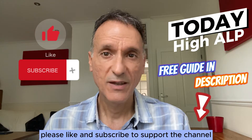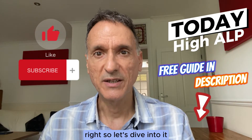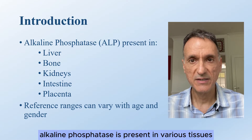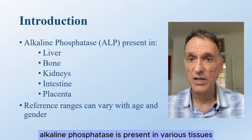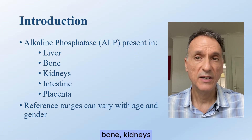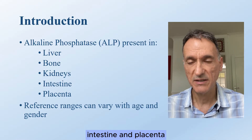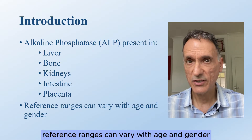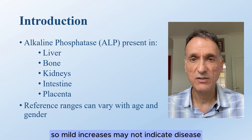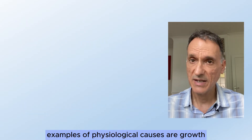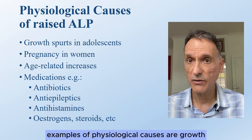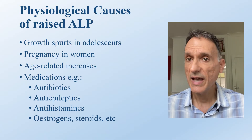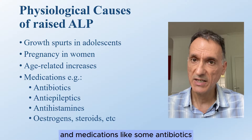Before we start, let's remember that alkaline phosphatase is present in various tissues including the liver, bone, kidneys, intestine, and placenta. Reference ranges can vary with age and gender, so mild increases may not indicate disease. Examples of physiological causes include growth spurts in adolescence, pregnancy, age-related increases, and medications.